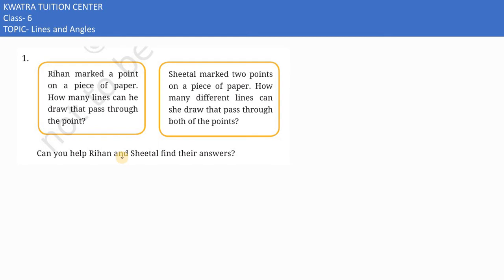So here in the first part, it says Rihan marked a point on a piece of paper. How many lines can he draw that pass through the point? Now he has made one point.